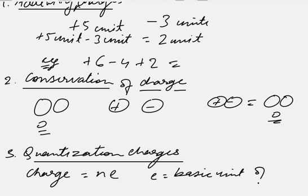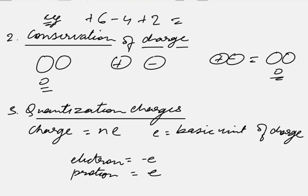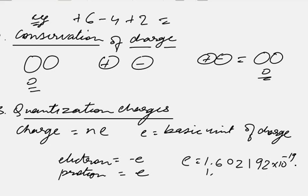It is the charge on an electron. An electron has a charge of minus e, and a proton has a charge of plus e. The value of e is 1.602192 × 10^-19 coulomb.